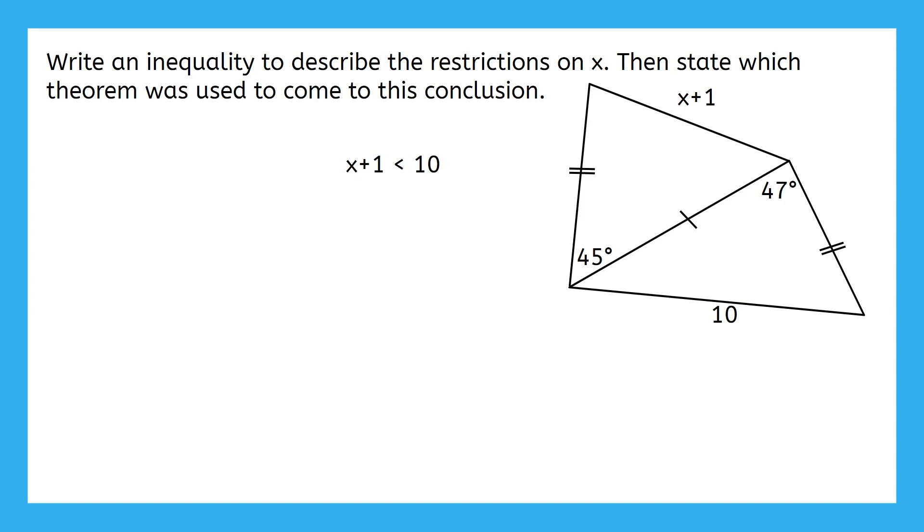This isn't all we can write though. Since this is the length of a side of a triangle, can x plus 1 really be any number less than 10? Or is there another boundary? If I add another symbol to the inequality, what number could we put on the other side of it? Well, we don't want our side length to be 0 or negative. So we can say that 0 must be less than x plus 1.